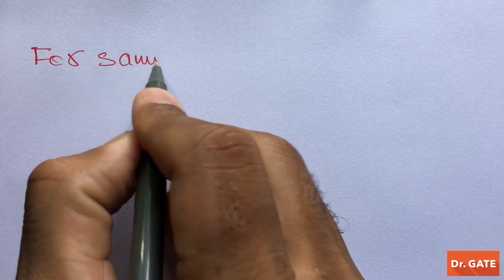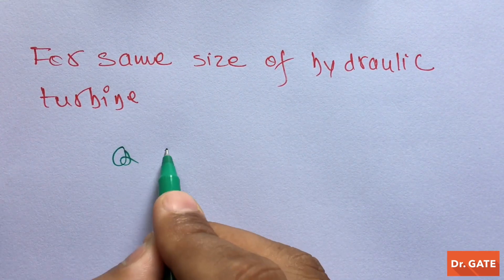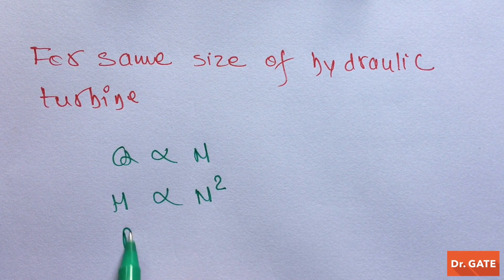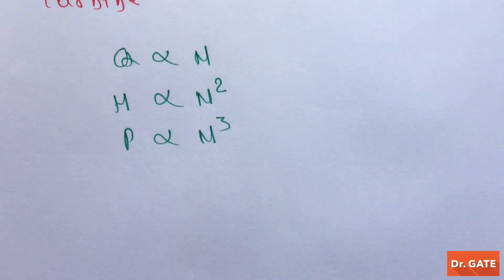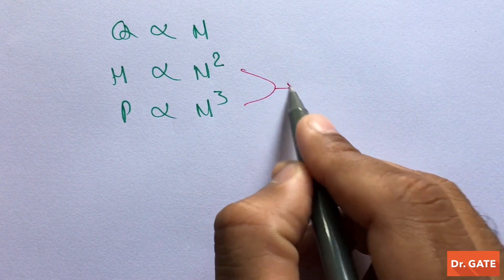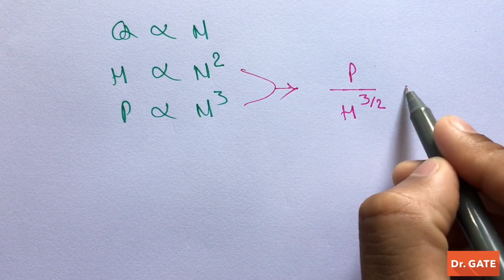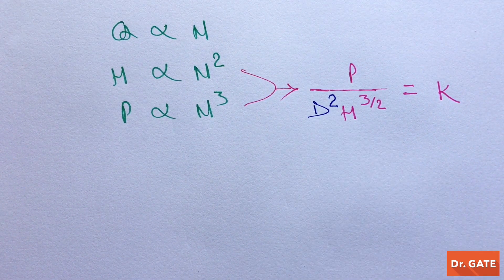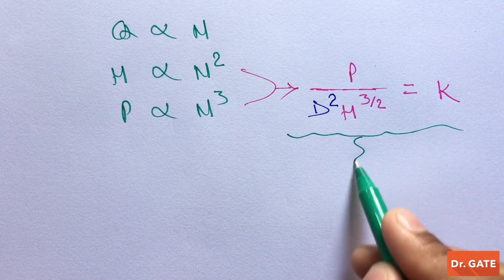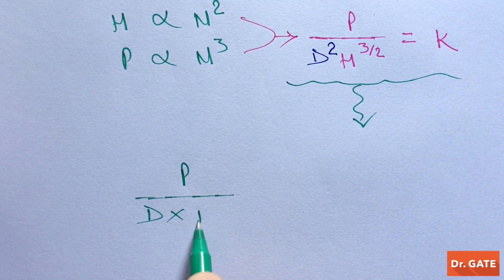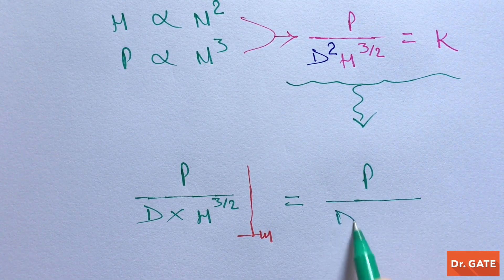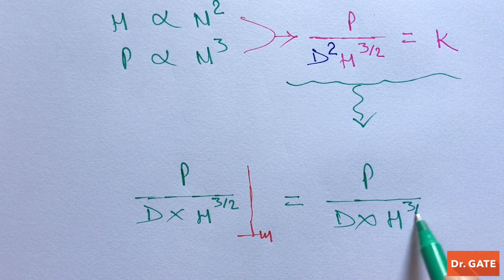From our previous class, we know that for the same size of hydraulic turbine, discharge is proportional to N, head is proportional to N squared, and power is proportional to N cubed. From these, we can conclude that power divided by h to the power 3/2 is a constant. If the sizes are not the same, we multiply by D squared, giving: power / (D² × h^(3/2)) of the model equals power / (D² × h^(3/2)) of the prototype.